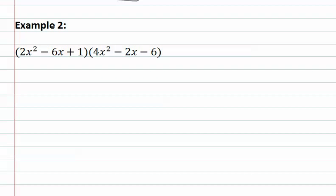Here we have two trinomials multiplied together. Again we'll have the same pattern though, we'll take the first term and distribute it all the way through. 2x squared times 4x squared is 8x to the fourth power.